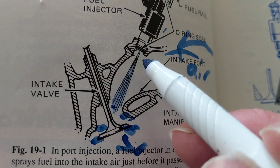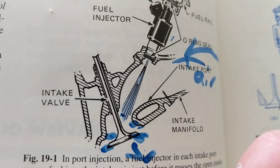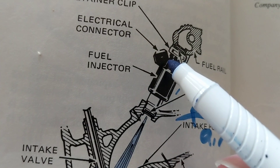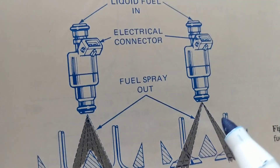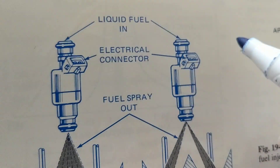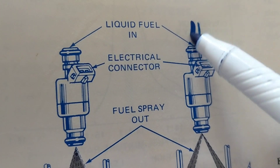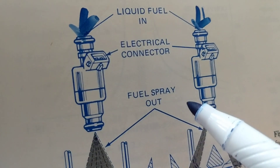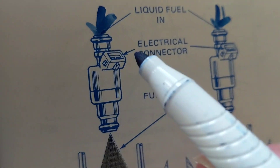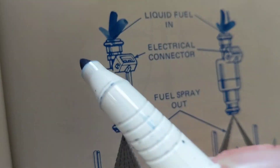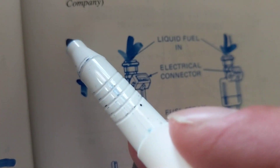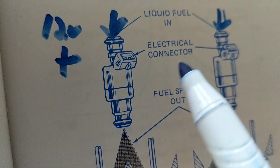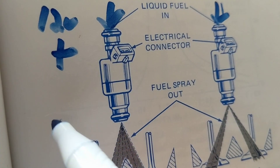We need air, fuel, compression, and a spark. Now let's look more closely at a fuel injector. The fuel injector has an electrical connector. As you can see, liquid fuel goes in, but that's not enough — we also need an electrical connection. You can see two connectors, two terminals. That means one will be B+ or 12 volts, and the other will be a control signal.